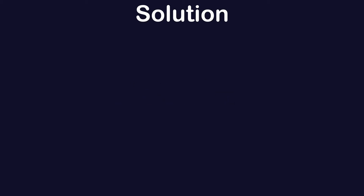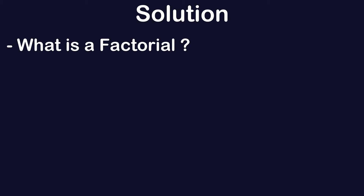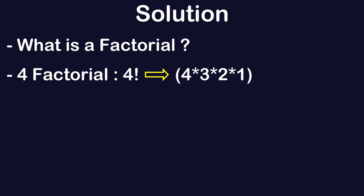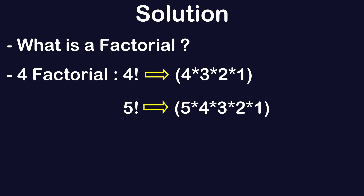To solve this problem, first we will understand what a factorial of a number is. When you say 4 factorial, written with an exclamation mark, you basically multiply the number with its previous number. So what actually happens is 4 × 3 × 2 × 1. If I want to find 5 factorial, it means 5 × 4 × 3 × 2 × 1. Starting from the number, you multiply with the previous number, that is n × (n−1), and this process keeps repeating until you reach 1.